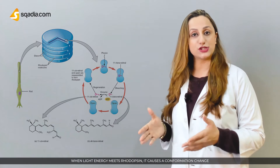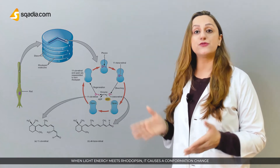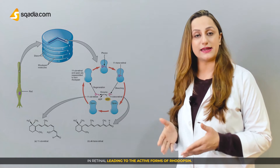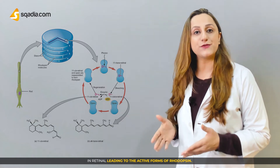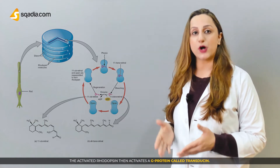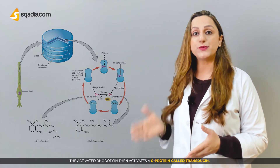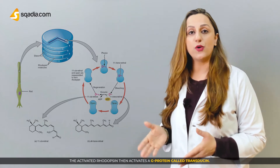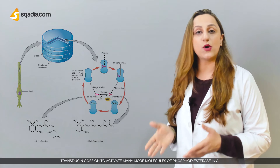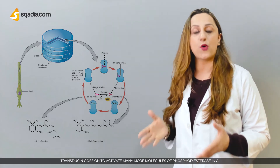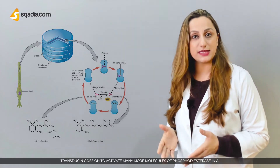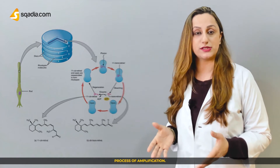When light energy meets rhodopsin, it causes a conformational change in the retinal, leading to the active form of rhodopsin. The activated rhodopsin then activates a G-protein called transducin, which goes on to activate many more molecules of phosphodiesterase in a process of amplification.